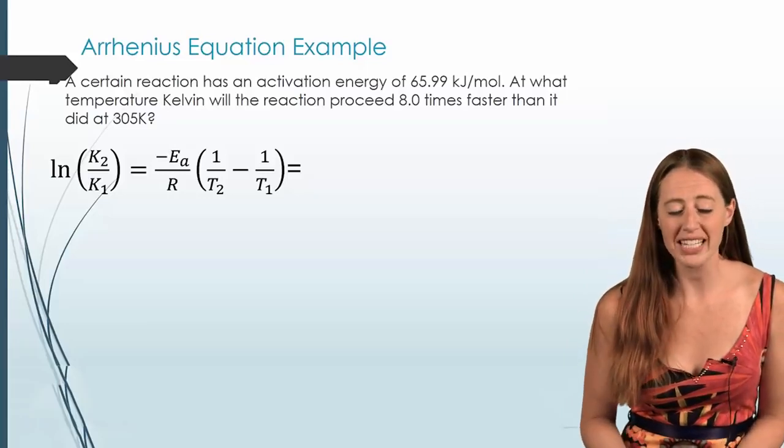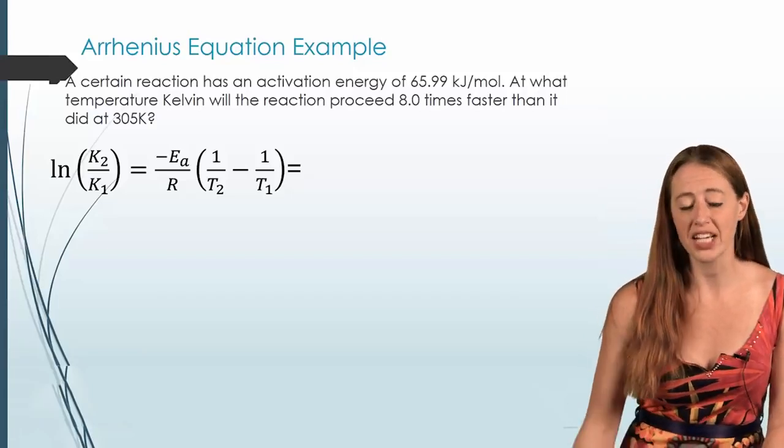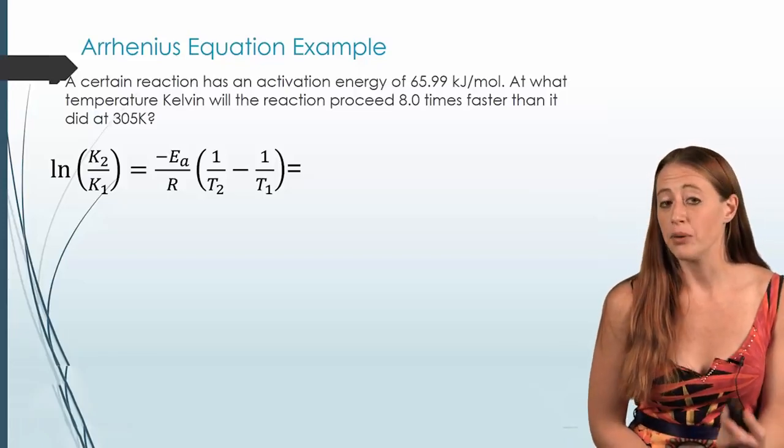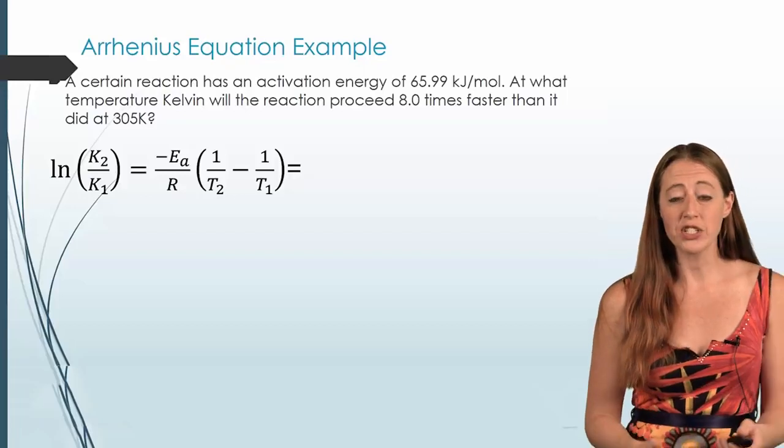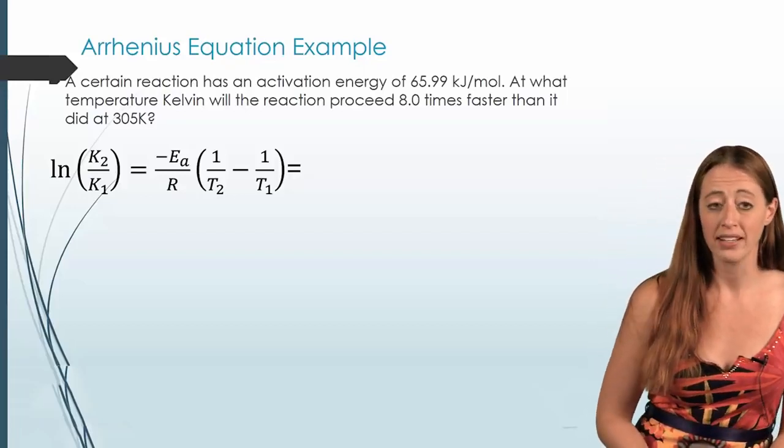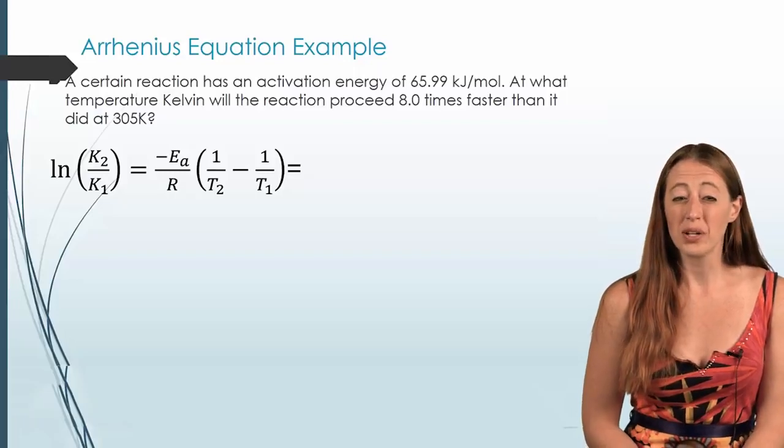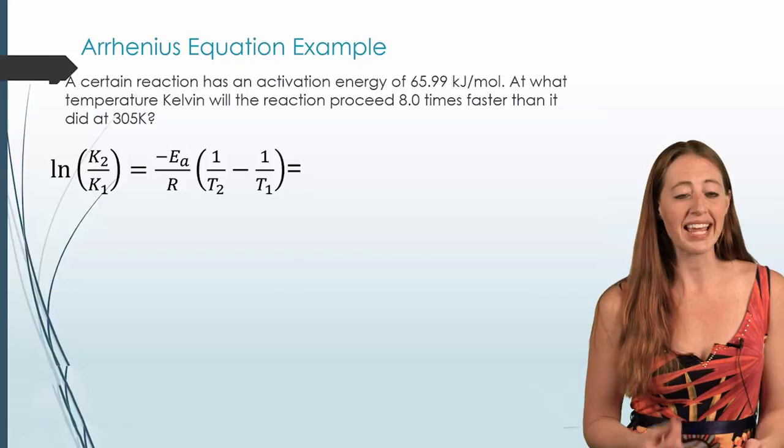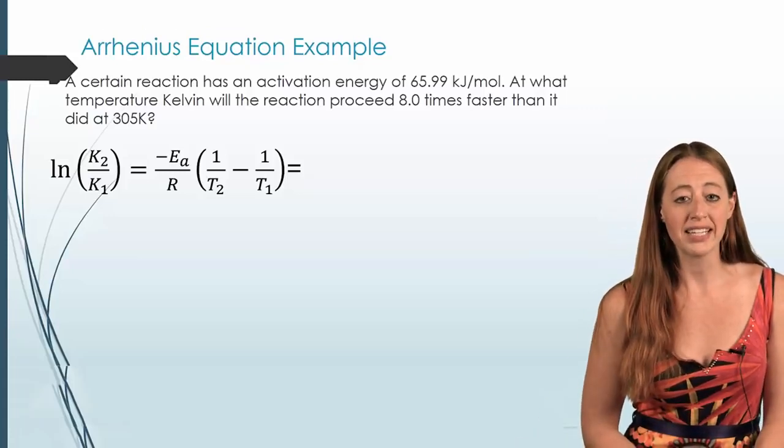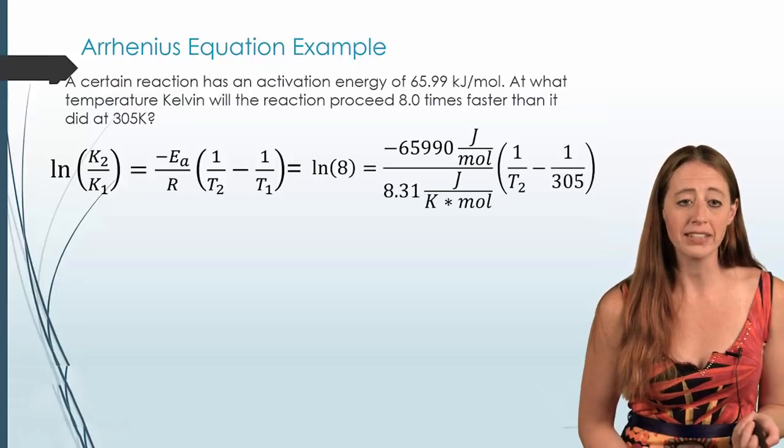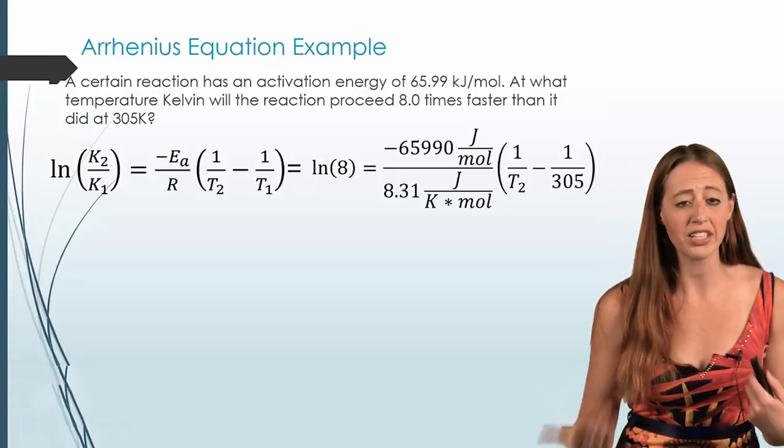For this one, we're going to start from the same place - that two-point formula. Now, I don't give you Ks here. I do give you one temperature, and I tell you we're solving for the other temperature, but no Ks. But we have to use what we know about what K is in terms of the reaction rate. We know that K is proportional to the reaction rate. So if K2 is related to K1 in the same way that rate 2 would be related to rate 1, we have some information we can use now. So the reaction is eight times faster, which means that K2 is eight times as great. So instead of looking at K2 and K1 and saying we don't have that, you have the information to fill in there. Because K2 is eight times as big as K1. And so we can fill in the natural log of eight for that. So we fill in the natural log of eight for that side of the equation.